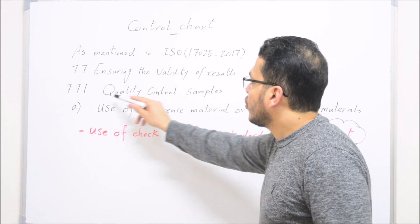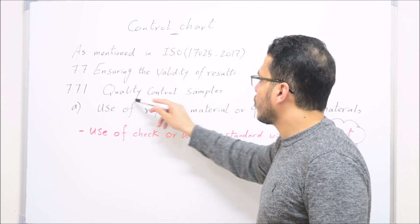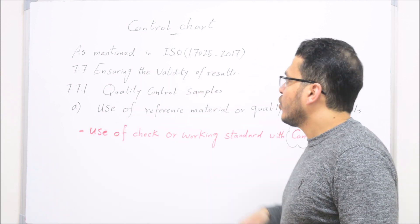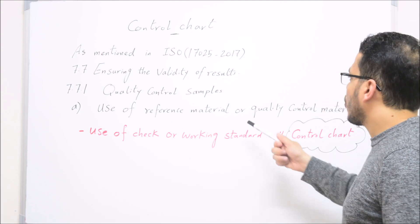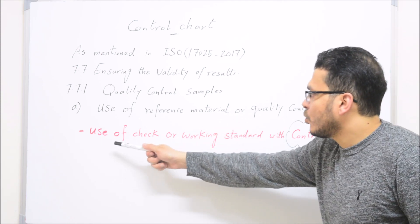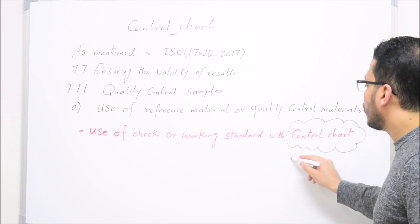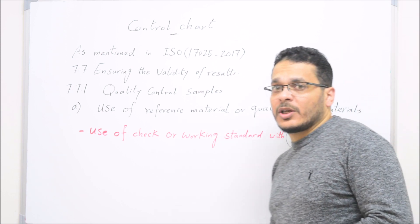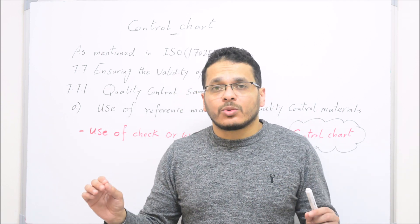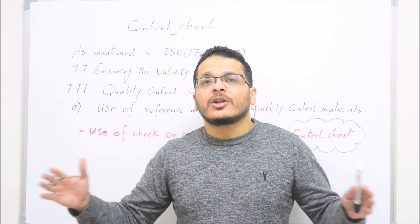Under clause 7.7, to ensure the validity of results you shall use quality control samples. One requirement is the use of reference materials or quality control materials. Under that, you must use check or working standards with a control chart. So you have to prepare a control chart to monitor the stability of your method over a period of time.